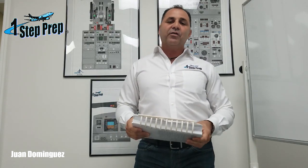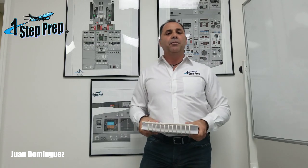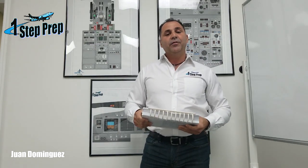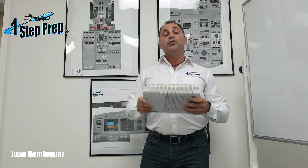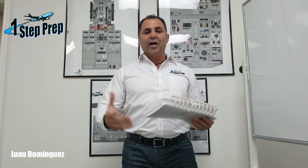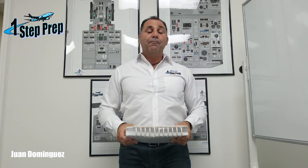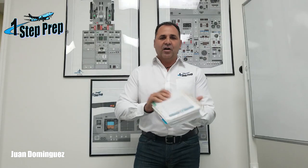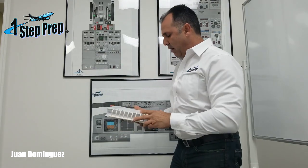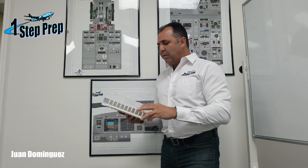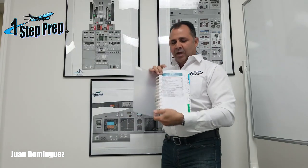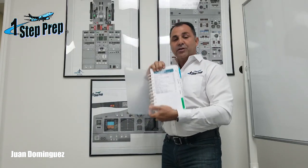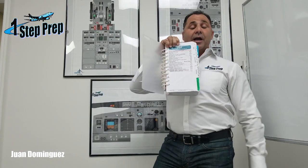Normally they should teach you this in ground school, but lately we've been having a little bit of a problem in how to use the QRH, how to find out the abnormals or emergency checklist. So let's go over just a little bit and quick. Normally the QRH — remember the first page of the QRH — this is going to be all your memory items.